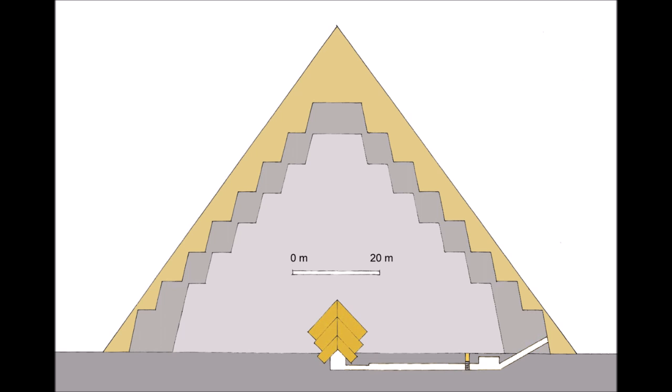Old Kingdom mortuary complexes consisted of five essential components: a valley temple, a causeway, a pyramid or mortuary temple, a cult or satellite pyramid, and the main pyramid. Neferirkare's mortuary complex only had two of these basic elements: a mortuary temple which had been hastily constructed from cheap mud brick and wood, and the largest main pyramid at the site. The valley temple and causeway that were originally intended for Neferirkare's monument were co-opted by Nyuserre for his own mortuary complex.